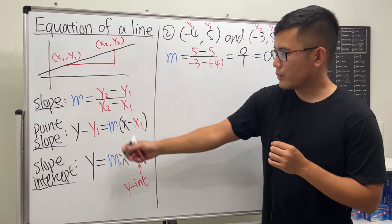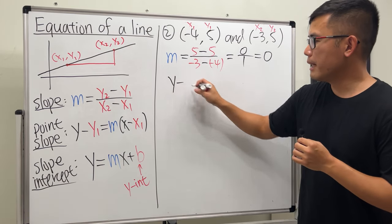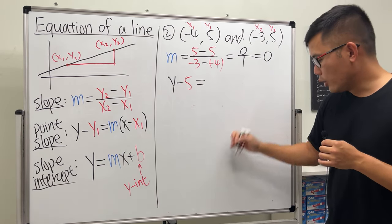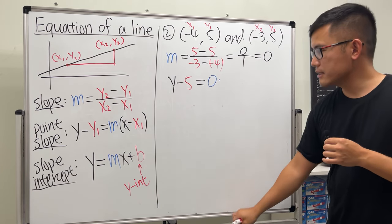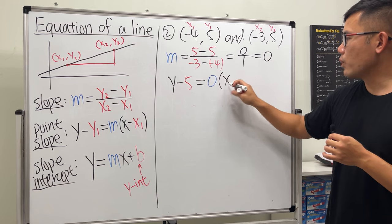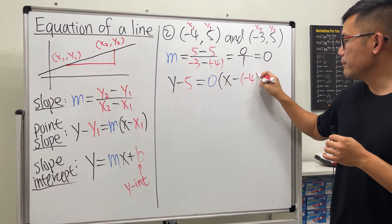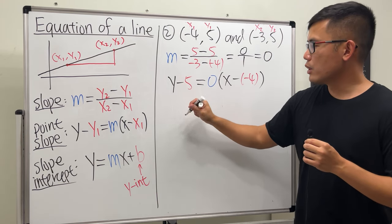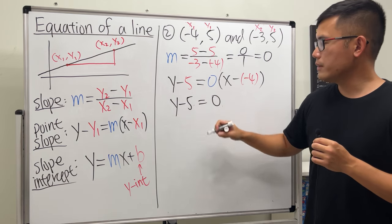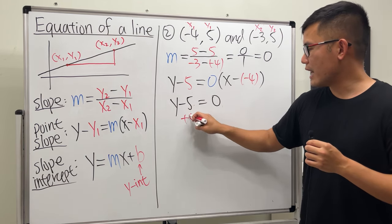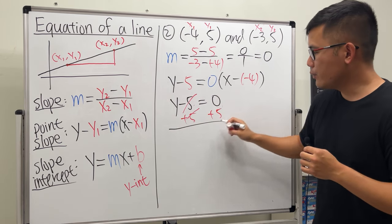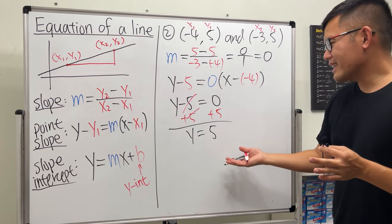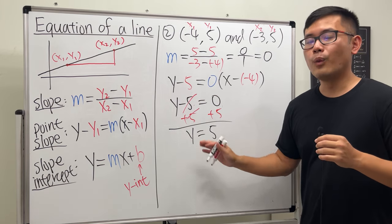The slope is 0. Using point-slope form: y − 5 = 0 · (x − (−4)), and zero times that quantity is zero, so y − 5 = 0. Adding 5 to both sides gives y = 5, with no x in the equation.